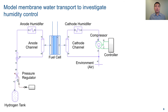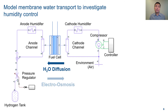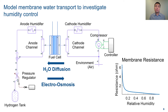The next step is to model water transport across the fuel cell membrane by adding the equations for diffusion and electroosmosis. This is important because the electrical resistance of the membrane is higher the drier it gets. Therefore, using this model, you can design the humidifiers to maintain the optimal humidity in the fuel cell.